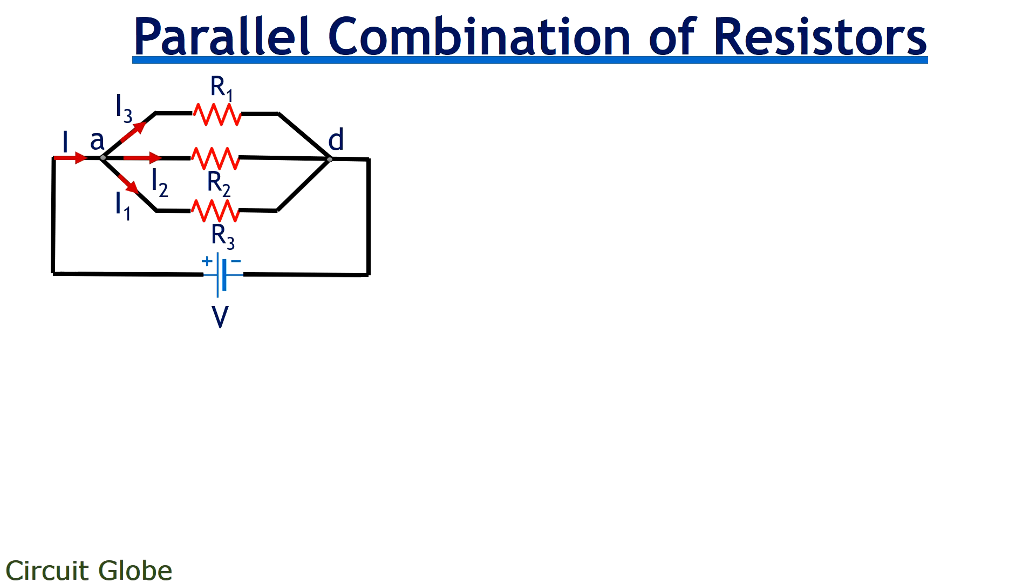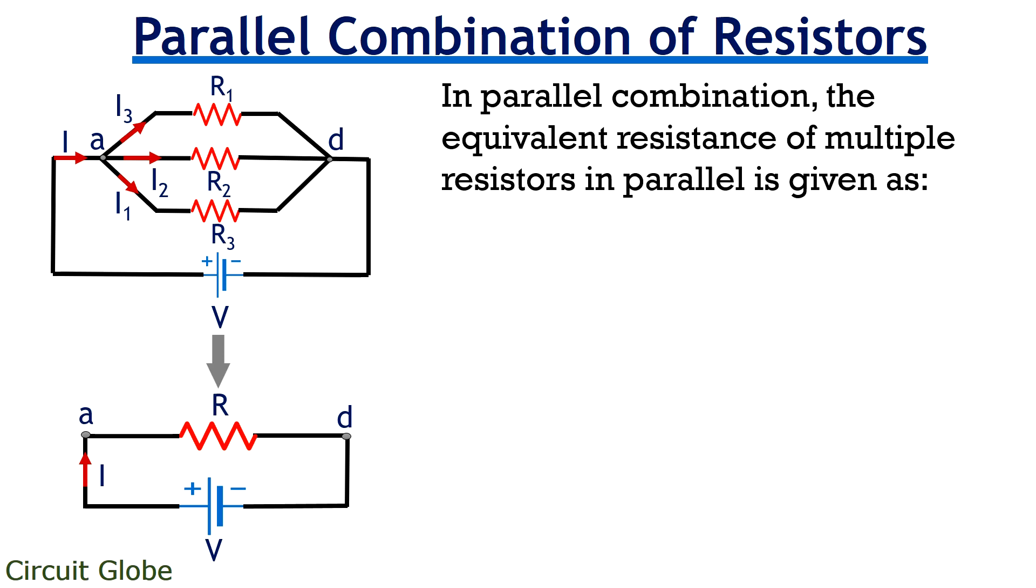Suppose we convert this particular circuit into an equivalent circuit comprising of only a single resistor, which is shown here. Therefore, the equivalent resistance of the resistors connected in parallel will be given as 1 upon R is equal to 1 upon R1 plus 1 upon R2 plus 1 upon R3. Let's now check how we have achieved this.